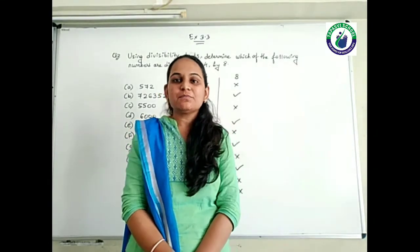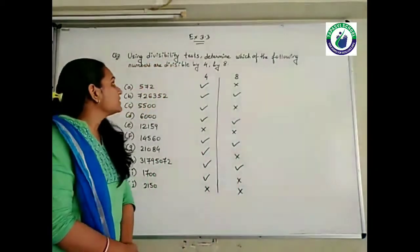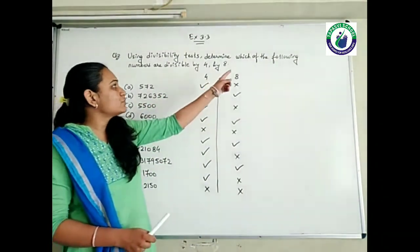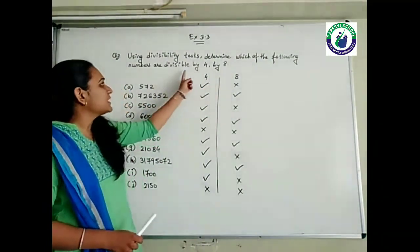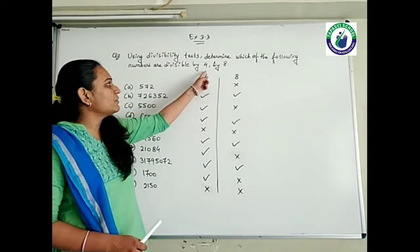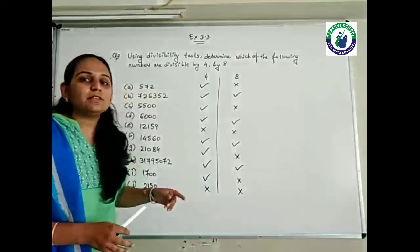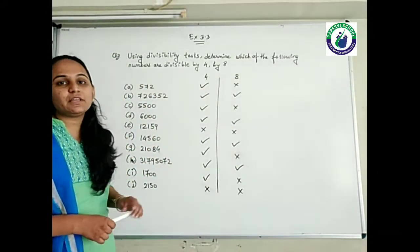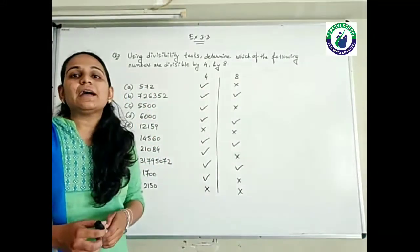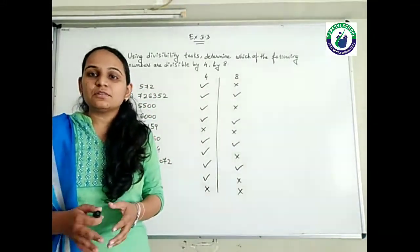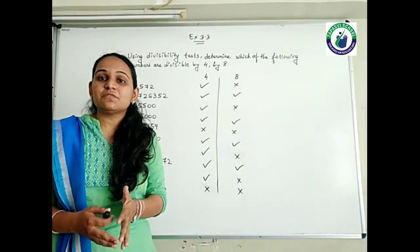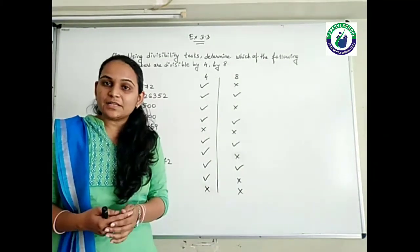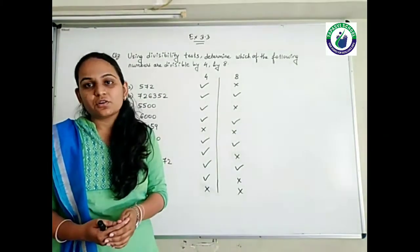Let's see the question. Question number 2 is: using the divisibility test, determine which of the following numbers are divisible by 4 and by 8. That means, these numbers have been given to you and you have to tell whether these numbers are divisible by 4, by 8 or not.